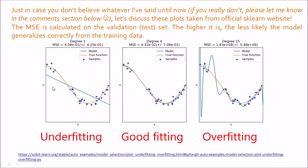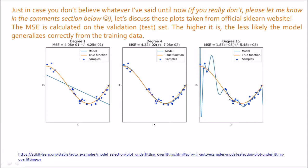The degree-1 straight line is underfitting — we are simply drawing a straight line without paying attention to the true underlying function. The degree-4 is the good fit — we are mapping as close as possible to the true function. The degree-15 is overfitting — we are not mapping the true function but trying to map each and every individual data point. Scikit-learn calculated the mean squared error: for degree-1, MSE was 4.08×10⁻¹, and for the degree-4 (true function approximation), MSE was 4.3×10⁻², which is 10 times better.